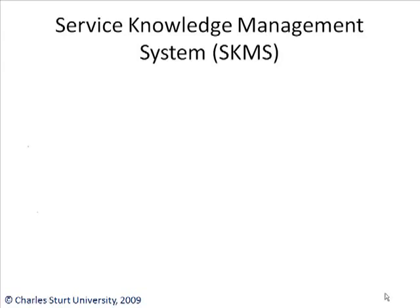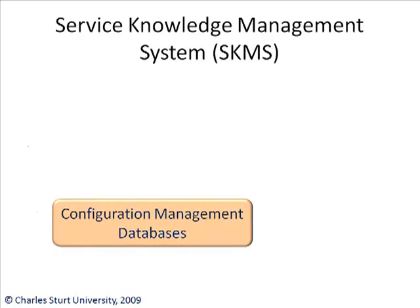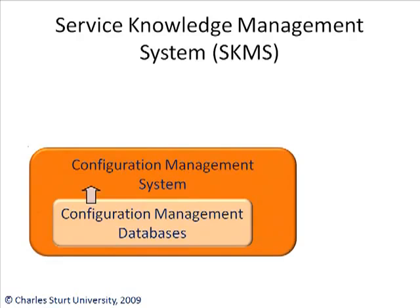Here's another view on the contents already presented. Your Configuration Management Databases typically contain information on your configuration items — for example, hardware, software, network components — and the important relationships between those items. The idea is to link all the information in your CMDBs to your Configuration Management System, the CMS. For example, if you've got an issue with your desktop, you want to link the desktop to the incident record. If you have 50 similar incident records, you want to link them to a problem record, combining all this service management data together.